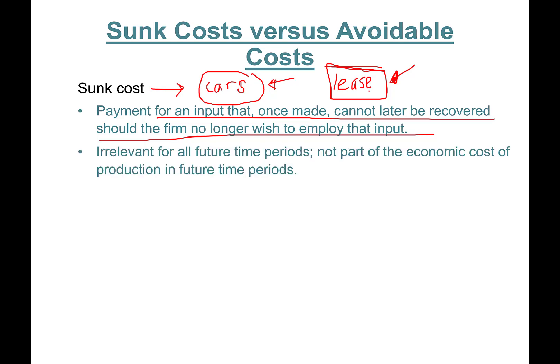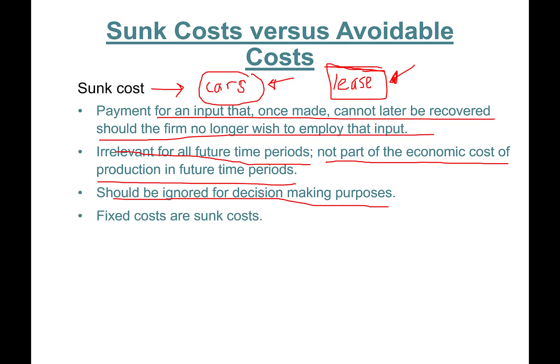Sunk costs are irrelevant for all future time periods. They're not going to be part of economic cost of production in future time periods. They should be ignored for decision making purposes. Therefore, when we draw the family of cost curves, we are not going to draw the average fixed cost. Fixed costs are sunk costs.